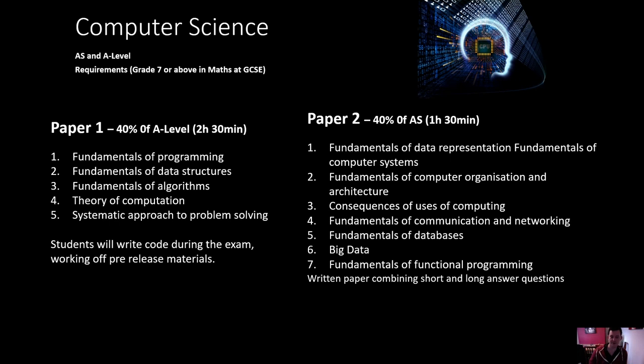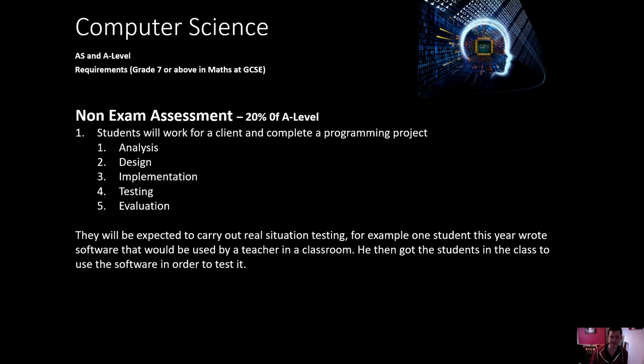Something worth pointing out as well. Paper two is a paper, an exam paper. But paper one is actually a computer-based exam where you'll be expected to be writing code during the exam situation. And you'll be learning some software, some code called C-Sharp, which gives us the ability to make apps, games and do our typical problem solving activities as well. And then during year 12, but it's assessed officially in year 13, you will do your own non-examined assessment.